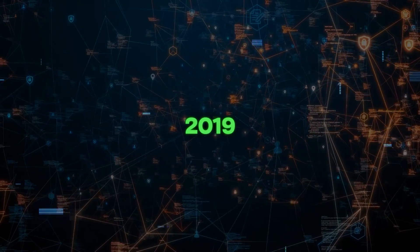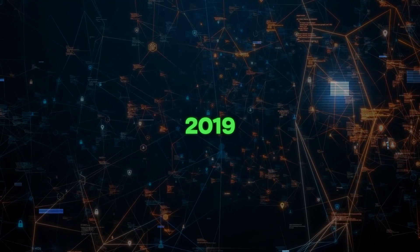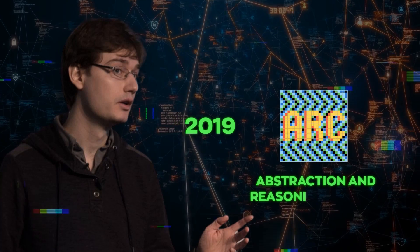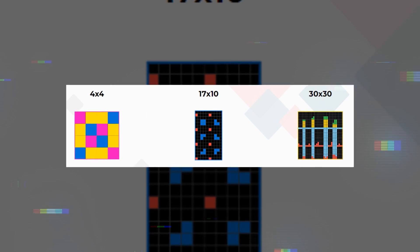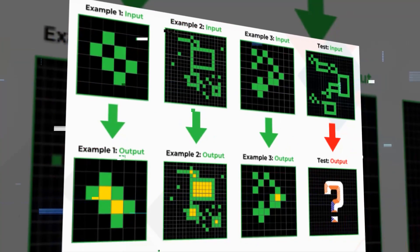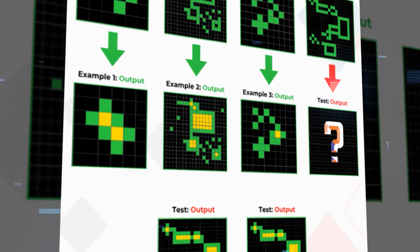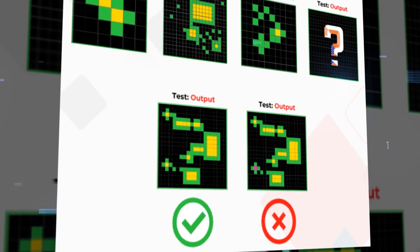In 2019, before large language models became popular, Chalet created an online test for AI systems called the Abstraction and Reasoning Corpus, or ARC. In this test, the AI systems are shown a series of images in which a pattern of squares changes. The AI has to understand the rule for this change and predict how the next pattern will transform.